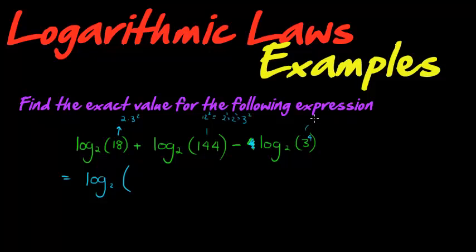And this is 3 to the power of 4. So let's use all of this. So I'm going to have 2 times 3 squared, that's the 18. And the 18 is going to multiply the 144 because they're being added together. Both of them are positive. So 144 can be written as 2 squared times 2 squared times 3 squared, divided by 3 to the power of 4.